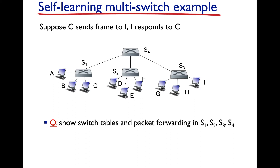Let's follow what happens in the switch table for each of our switches S1, S2, S3, and S4, when a frame is sent from host C connected to switch S1 to host I connected to switch S3, and then I responds back to C. Let's walk through this step by step. We'll draw switch tables for S1, S4, S3, and another switch, each with MAC address and interface columns.